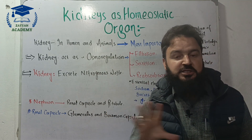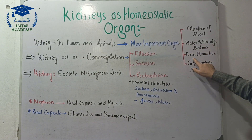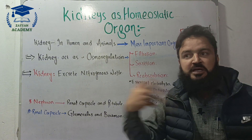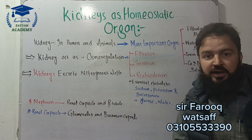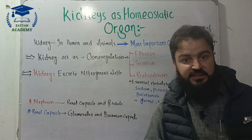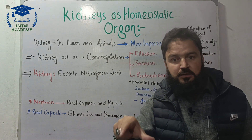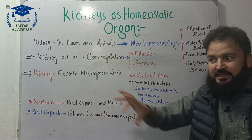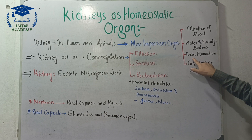Toxin elimination is another critical kidney function. This includes eliminating drugs and toxic compounds such as ammonia, which is produced by the breakdown of proteins and amino acids in the liver. The liver converts toxic ammonia through enzymatic reactions, combining it with carbon dioxide to form urea. This nitrogenous waste is then excreted out with the help of the kidney.